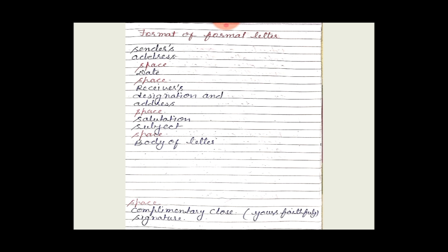In the formal letter, after the date and space, we write the receiver's address with their designation. Then we leave space and write the salutation. In modern English nowadays, the salutation is written above the subject. The salutation is 'Dear Sir' or 'Respected Ma'am'.